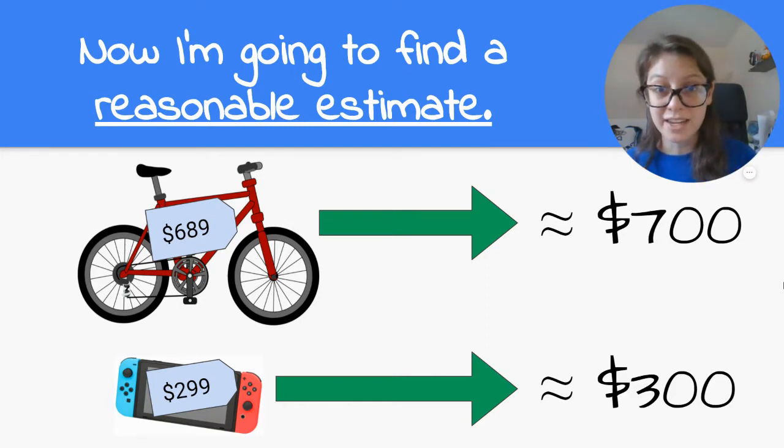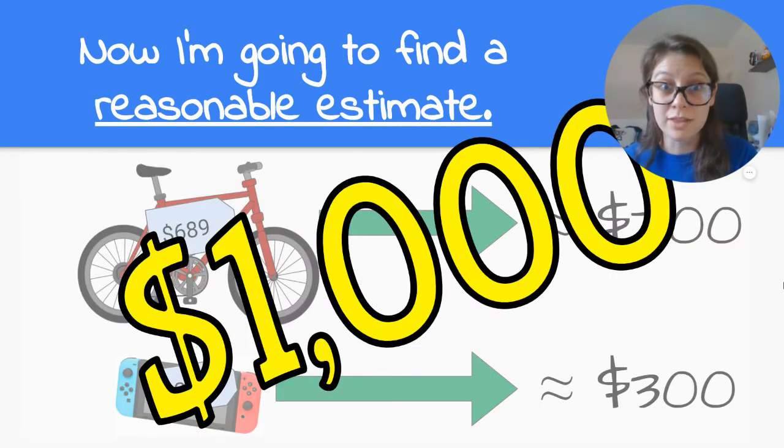So $700 plus $300 would give me $1,000. So my answer, or the cost of these two items, is going to be about $1,000.